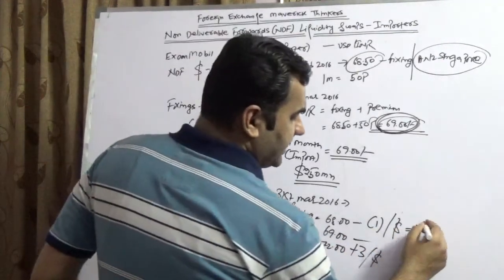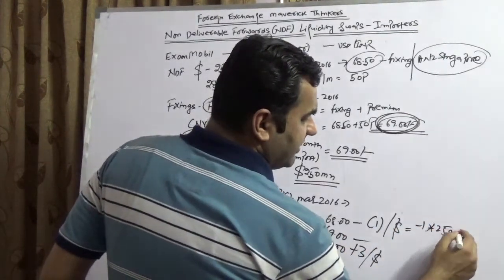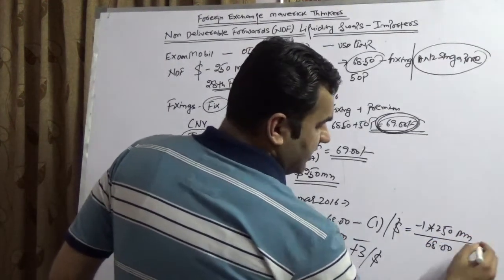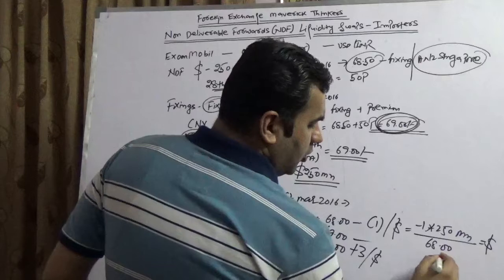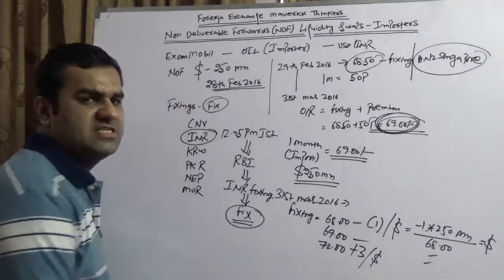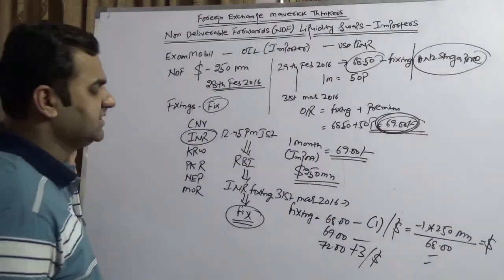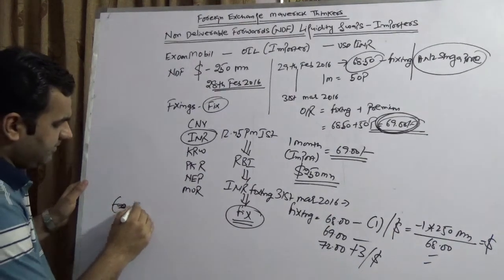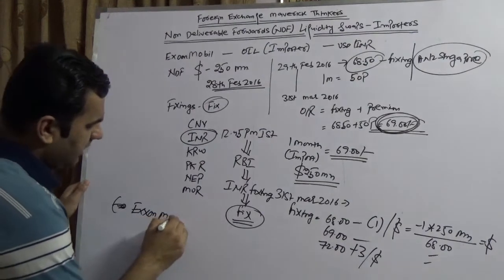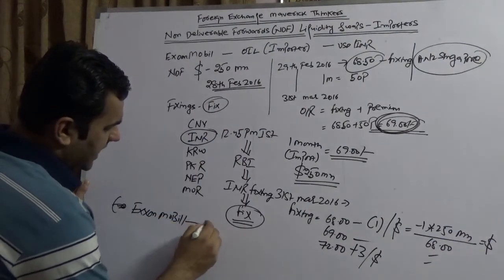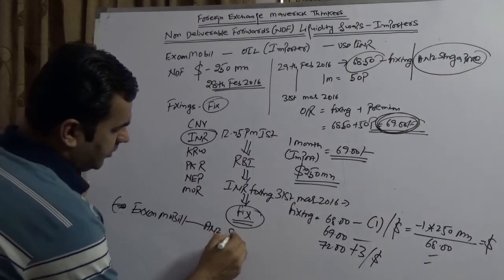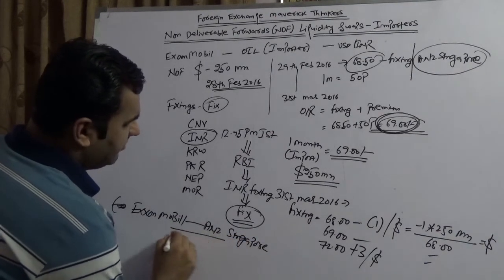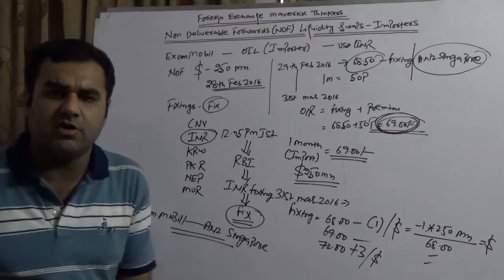So how would you calculate the dollar amount? It is equal to minus one into 250 million divided by the fixing rate, which is 68. So this is the dollar you pay or you have to receive from ANZ Singapore. This is a transaction which would happen between ExxonMobil and ANZ Singapore.